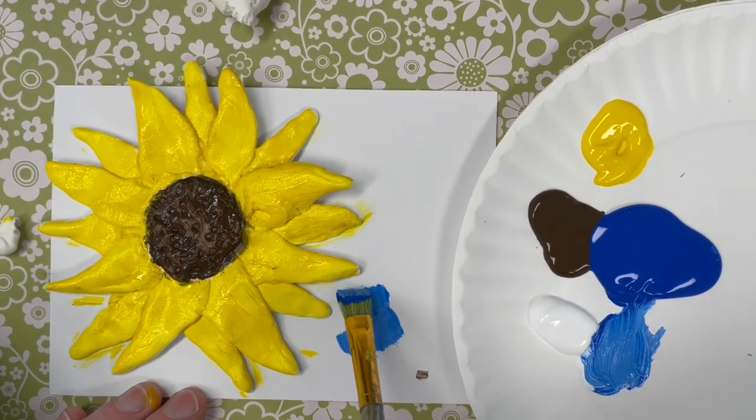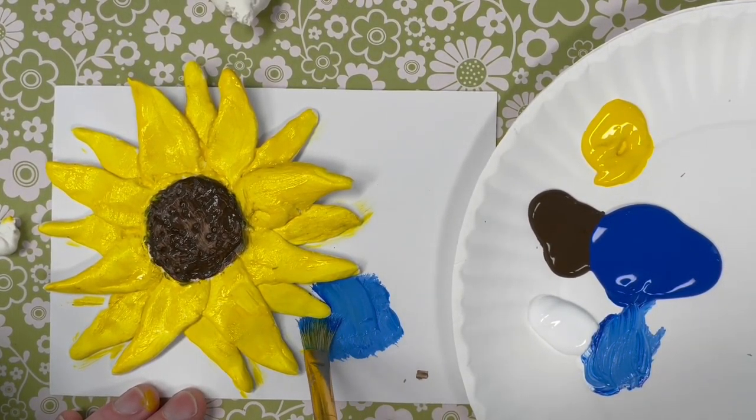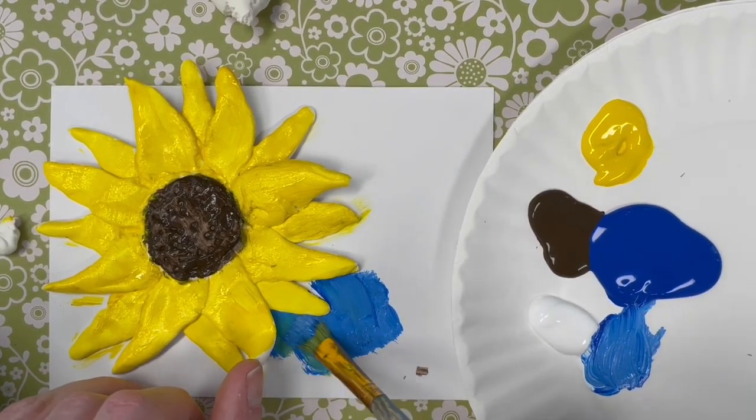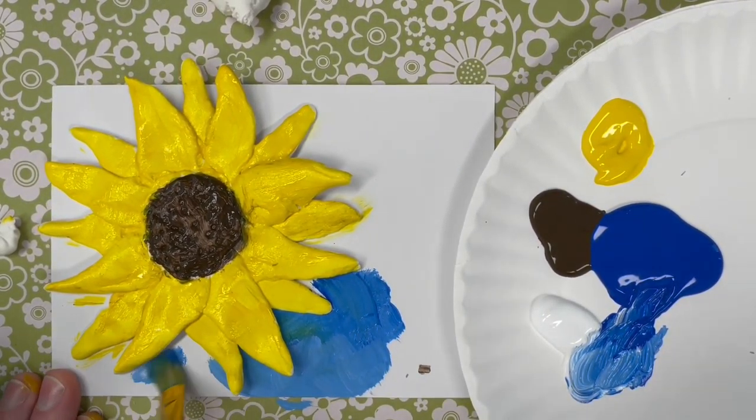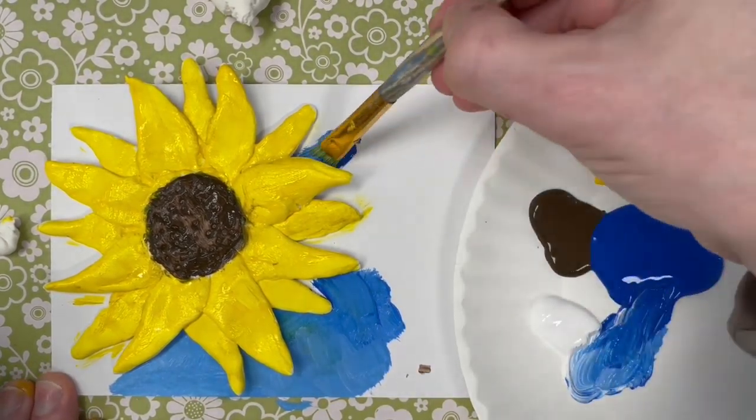So fast forward, we're going to mix some white and some blue together to make this kind of nice light blue. And the cool thing about Model Magic is that it's still pliable so we can lift up and paint under the flower petals.